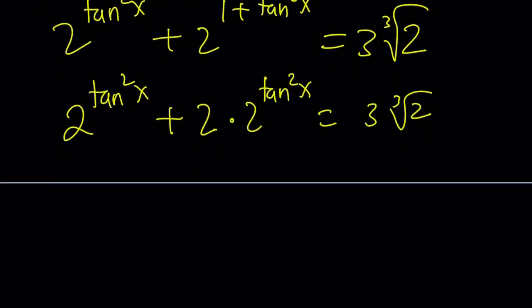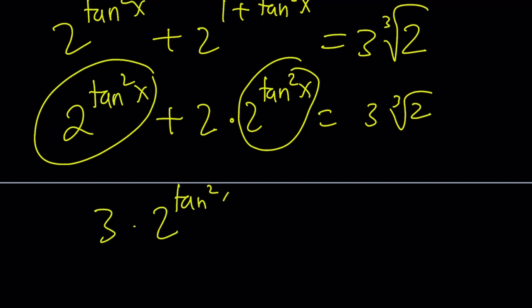And now notice that I'm kind of like looking at the same expression. One apple plus two apples, that's going to make three apples. So I have three times two to the power tangent squared x here, which is very nice because I have another three. That's a really weird writing. I can't blame my cat for that because she's gone. But anyways, so that's what I get.